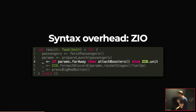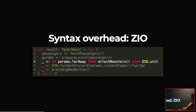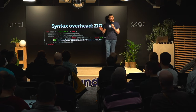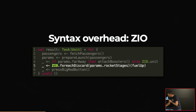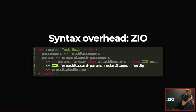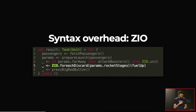If we want to conditionally run some code, we always need an else branch with an empty program description. If we want to iterate over all the rocket stages to fuel them up, we cannot use a normal for loop — we have to use a built-in forEach method, which is a variant of traverse that sequences all these operations properly. So there's quite high syntactic overhead. It's a completely different style of programming you have to get used to — it's learnable, but it's a step you have to take.